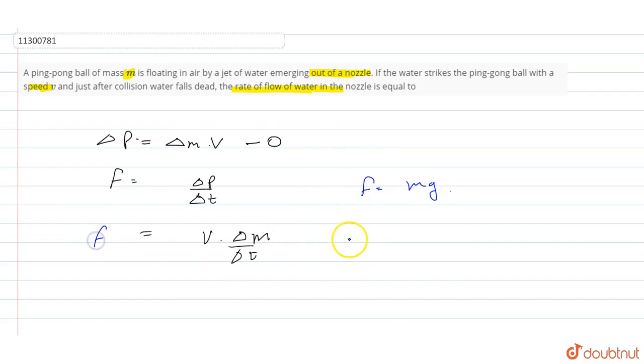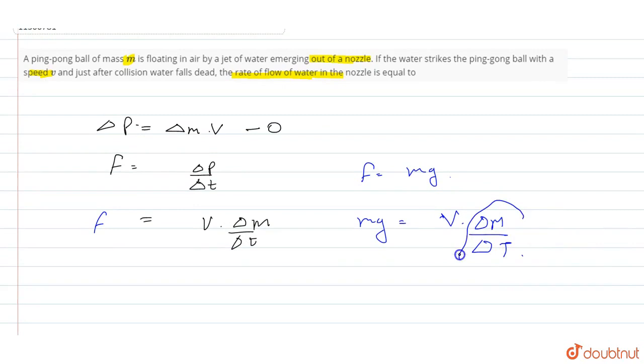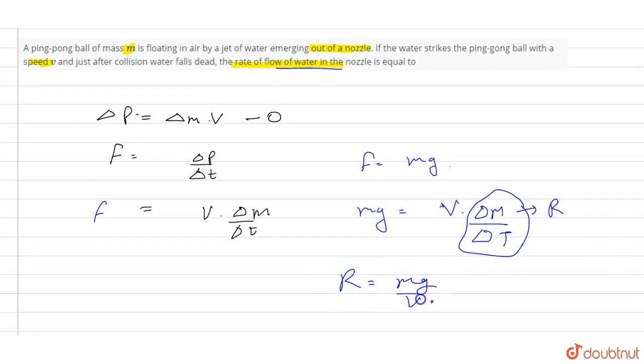So mg equals V times delta M by delta T. The rate of flow of water, delta M by delta T, we need to find. So this is mg by V. The rate of flow of water is mg by V.